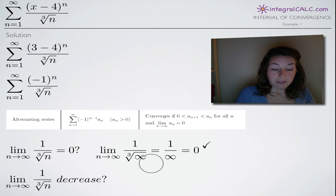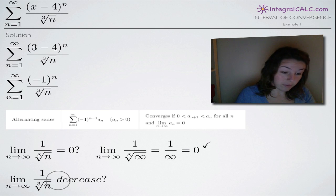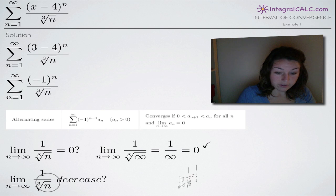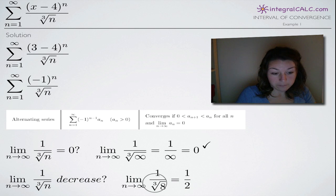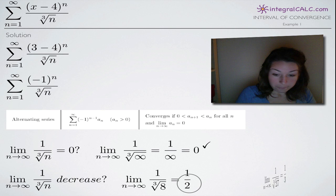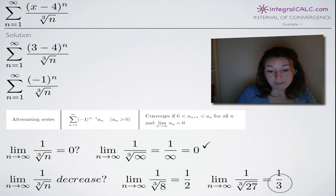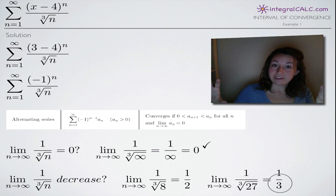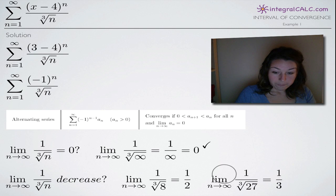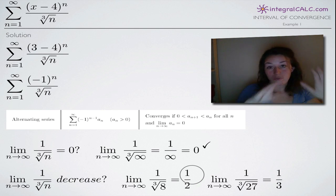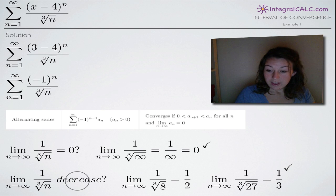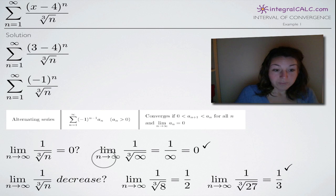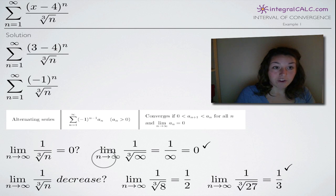The second condition is that the function decreases as n increases. Plugging in n equals 8 gives 1 half; plugging in n equals 27 gives 1 third. As n goes from 8 to 27, the function decreases from 1 half to 1 third — both conditions are met, so the series converges at x equals 3.